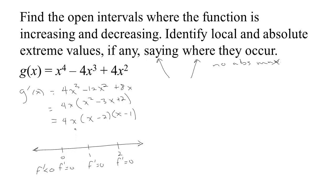Between 0 and 1, x is positive, and both (x minus 2) and (x minus 1) are negative, so we have positive times negative times negative — the derivative is greater than zero. Between 1 and 2, (x minus 1) becomes positive but (x minus 2) stays negative, so the derivative is less than zero. Once x is greater than 2, all factors are positive, so the derivative is positive.